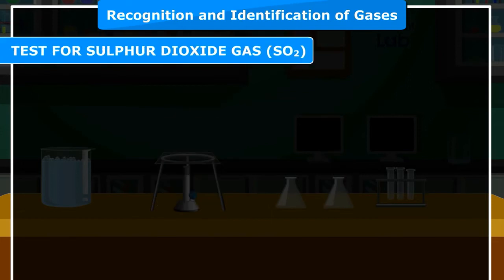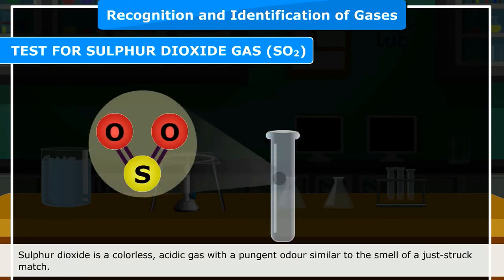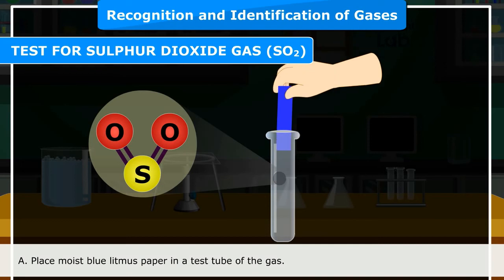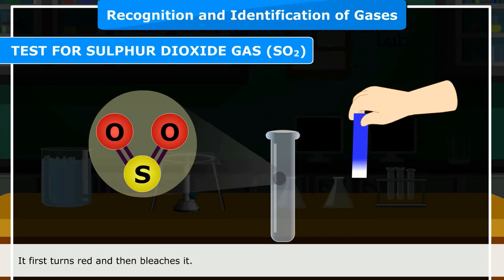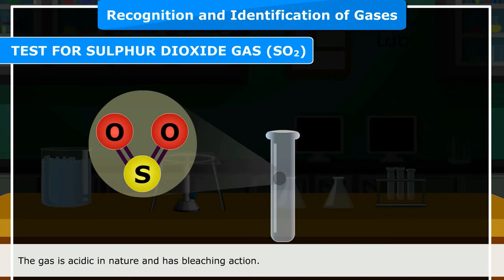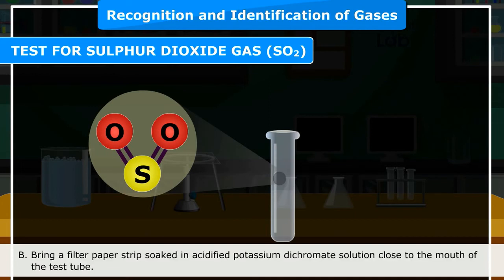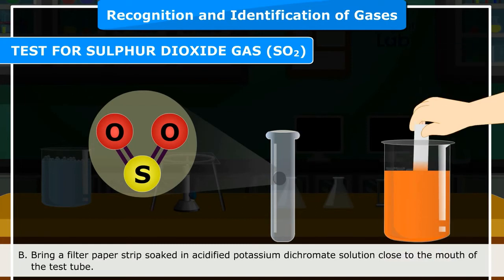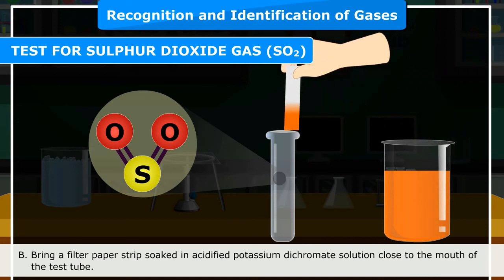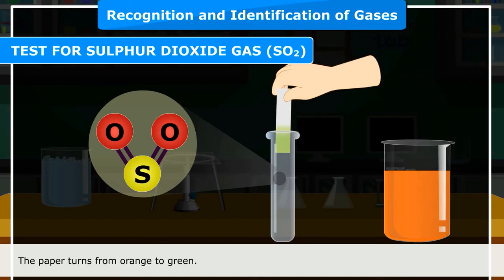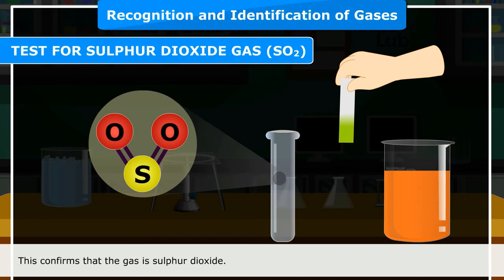Test for sulfur dioxide gas (SO₂): Sulfur dioxide is a colorless, acidic gas with a pungent odor similar to a just-struck match. Confirmatory test A: Place moist blue litmus paper in the gas — it first turns red, then bleaches. Confirmatory test B: Bring a filter paper strip soaked in acidified potassium dichromate solution close to the gas — the paper turns from orange to green. This confirms that the gas is sulfur dioxide.